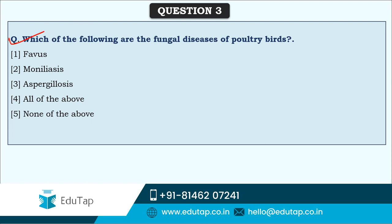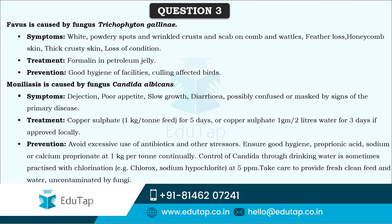Next question: which of the following are fungal diseases of poultry birds? The options given are favours, moniliasis, and aspergillosis — and yes, all these are caused by fungus and are fungal diseases. Favours is caused by the fungus Trichophyton gallinae. Symptoms include white powdery spots, wrinkled crust and scab on comb and wattles, feather loss, and honeycomb skin. It can be treated by mixing formalin in petroleum jelly and applying it.